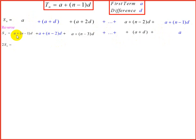If we add a plus a plus n minus 1d, a plus a is 2a plus n minus 1d. And if we add the next term, a plus d plus a plus n minus 2d, remember a plus a is 2a once again.